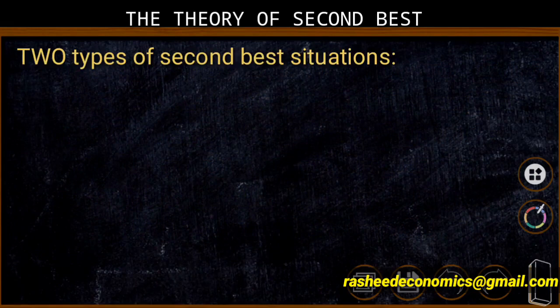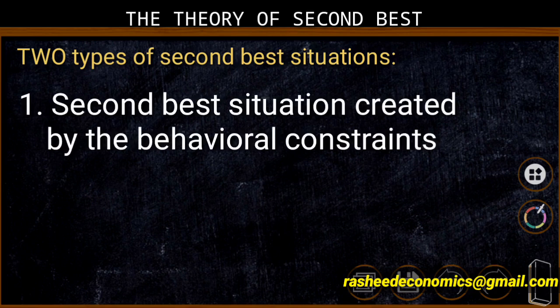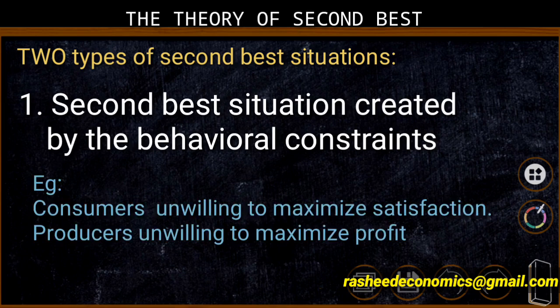There are mainly two types of second best situations. The first situation is a second best situation created by behavioral constraints — constraints raised by some economic agents. For example, some consumers may be unwilling to maximize their satisfaction, or some businessmen may be unwilling to maximize their profit. In such a situation, because of the behavioral constraints of these economic agents, we are forced to rely on the second best solution.